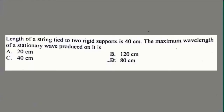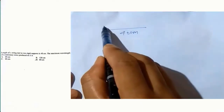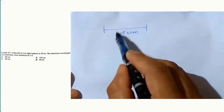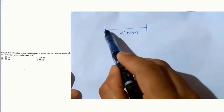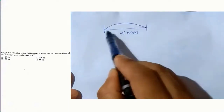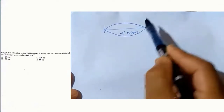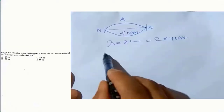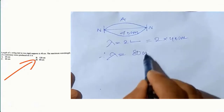The length of a string tied to a rigid support is 40 cm. We have to find the maximum wavelength of a stationary wave produced on it. To produce the maximum wavelength, we should have one antinode in the middle. When there is one antinode in the middle, the wavelength is 2 times the length. Therefore, the maximum wavelength is 2 times 40 cm, which equals 80 cm.